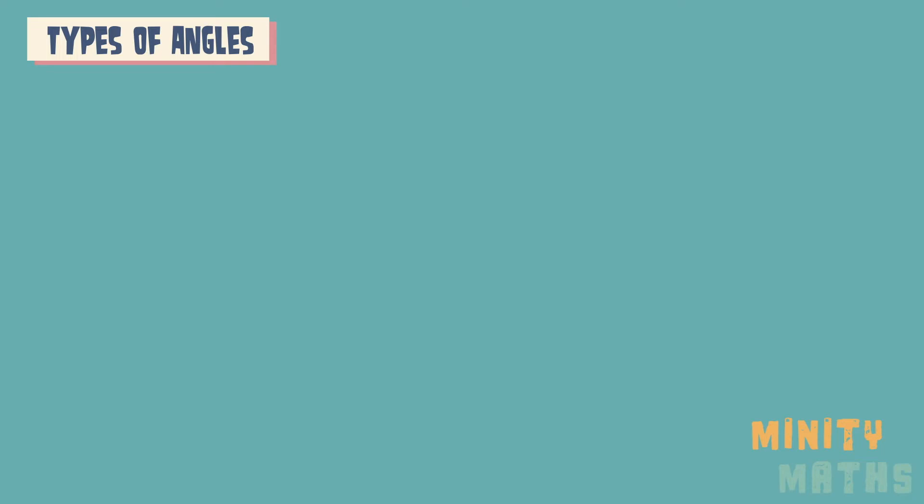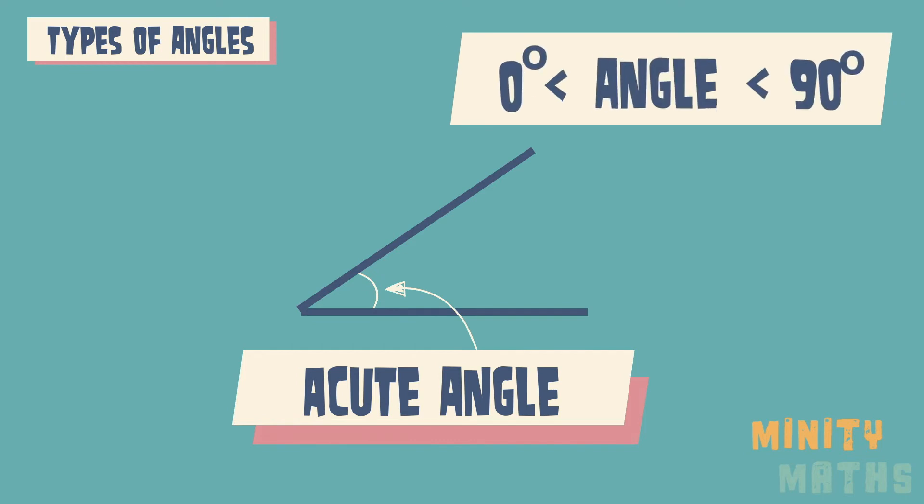There are different types of angles. Acute angles are angles which are greater than zero and less than 90 degrees.